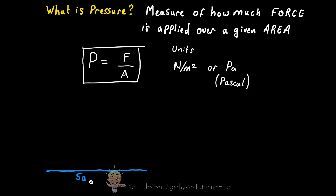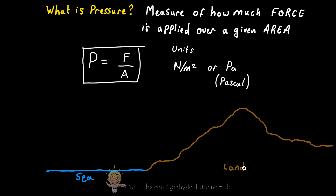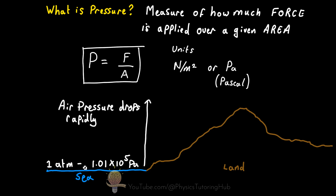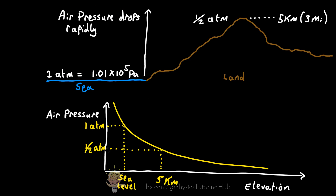Fluids can also exert pressure on surrounding surfaces, and the pressure within a fluid increases with depth. At sea level, air pressure is around 1.01 times 10 to the 5 pascals — typically called one atmosphere of pressure. As we move to higher elevations this pressure drops quite quickly, and by around five kilometers or three miles above sea level this pressure drops by about half, as shown in this diagram where elevation is on the x-axis.